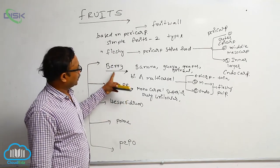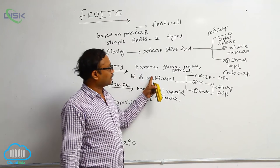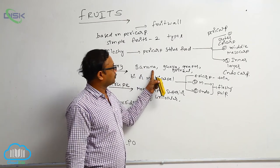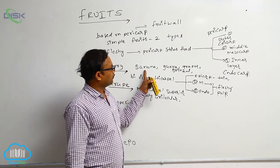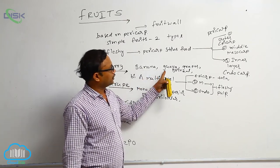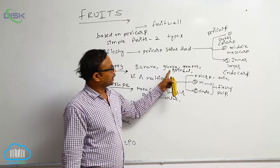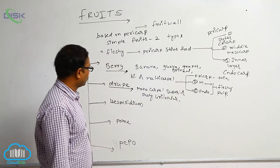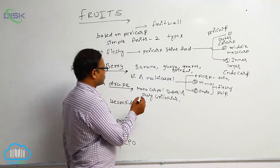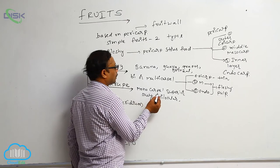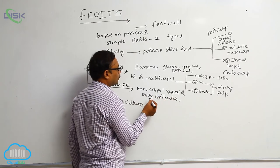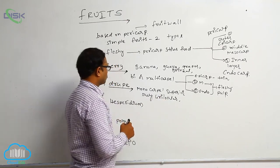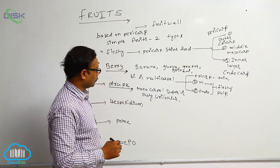In berry fruit, the ovary can be superior or inferior — for example, banana is inferior, guava is inferior, grapes is superior, brinjal is superior. But drupe is particularly monocarpel, superior ovary, and unilocular — that is what distinguishes it as drupe.